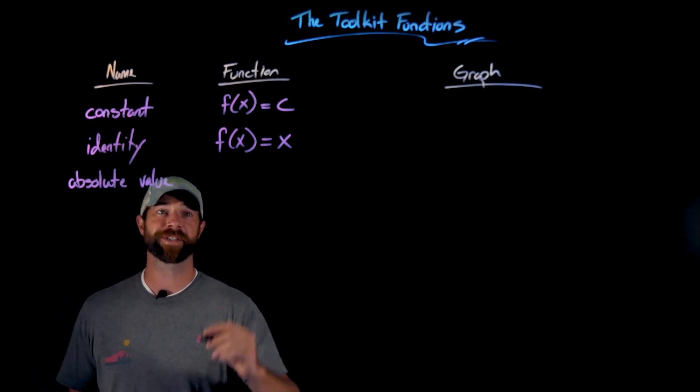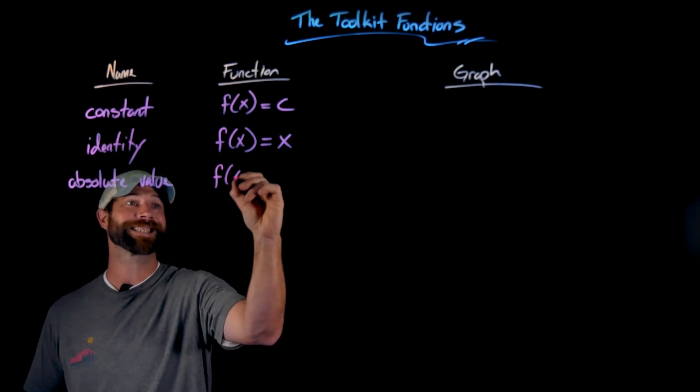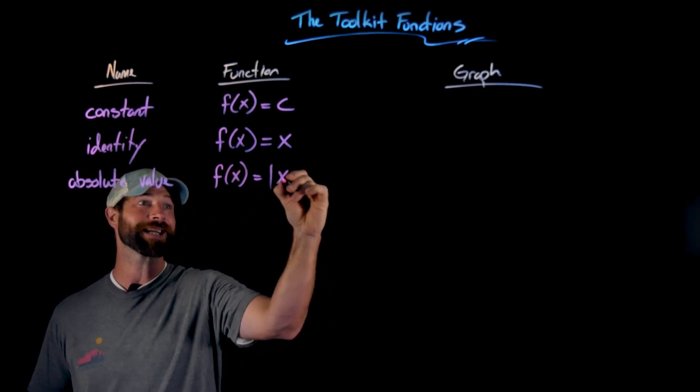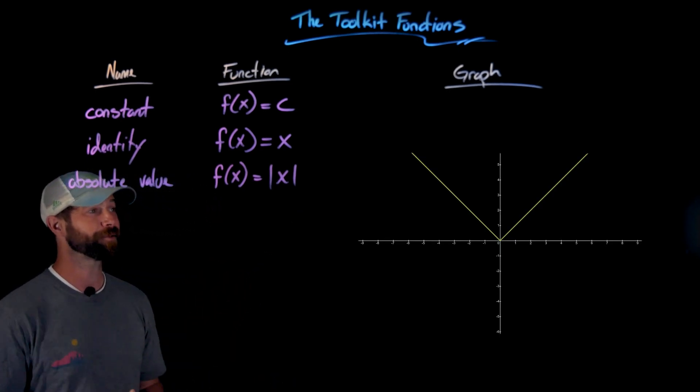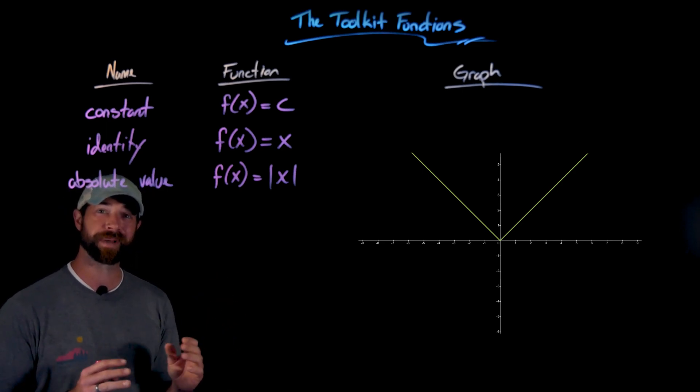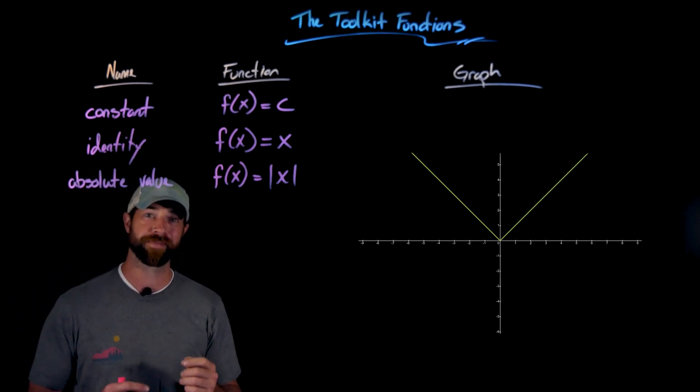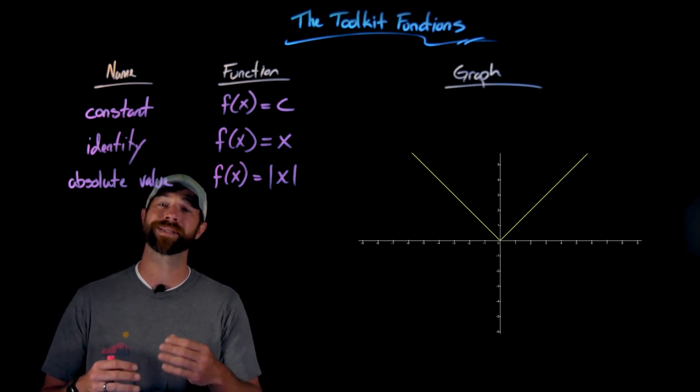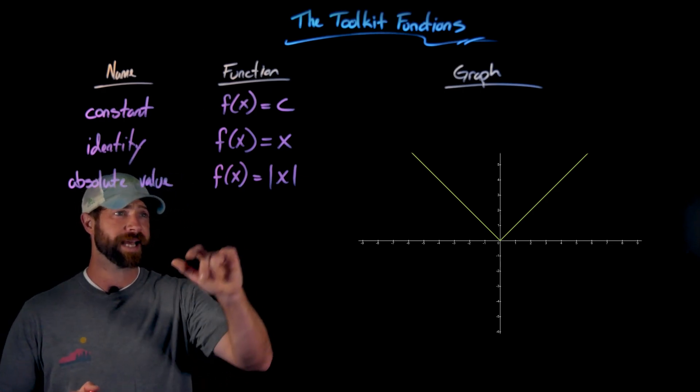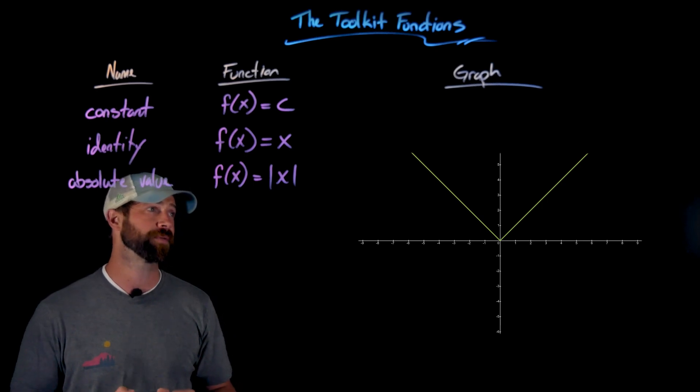The next toolkit function is f(x) equals the absolute value of x. We call this the absolute value toolkit function. Here's the graphical representation—it's this v-shape. Importantly, the absolute value function is really broken into two pieces, and we'll talk more about this when we discuss piecewise functions and a rigorous definition of the absolute value.